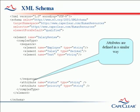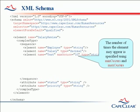Attributes are defined in a similar way to elements — they are placed just inside the complex type. In our document, the element called 'text' appeared twice. We can express this in the XML schema using maxOccurs. This states the maximum number of times that an element may be repeated in the document. If there is no limit, then we say it is unbounded.